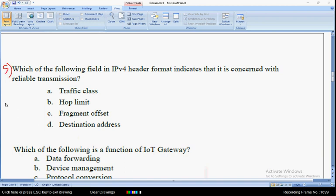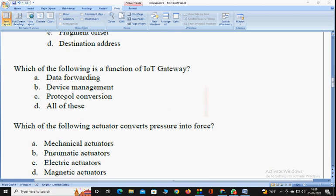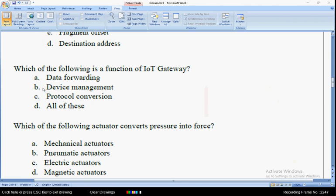Coming to the next question, that is the fifth one: which of the following field in IPv4 header format indicates that it is concerned with reliable transmission? The answer for the fifth question is option C: fragment offset set. So mark the third option as correct for the fifth question. And let's move on to the sixth one.